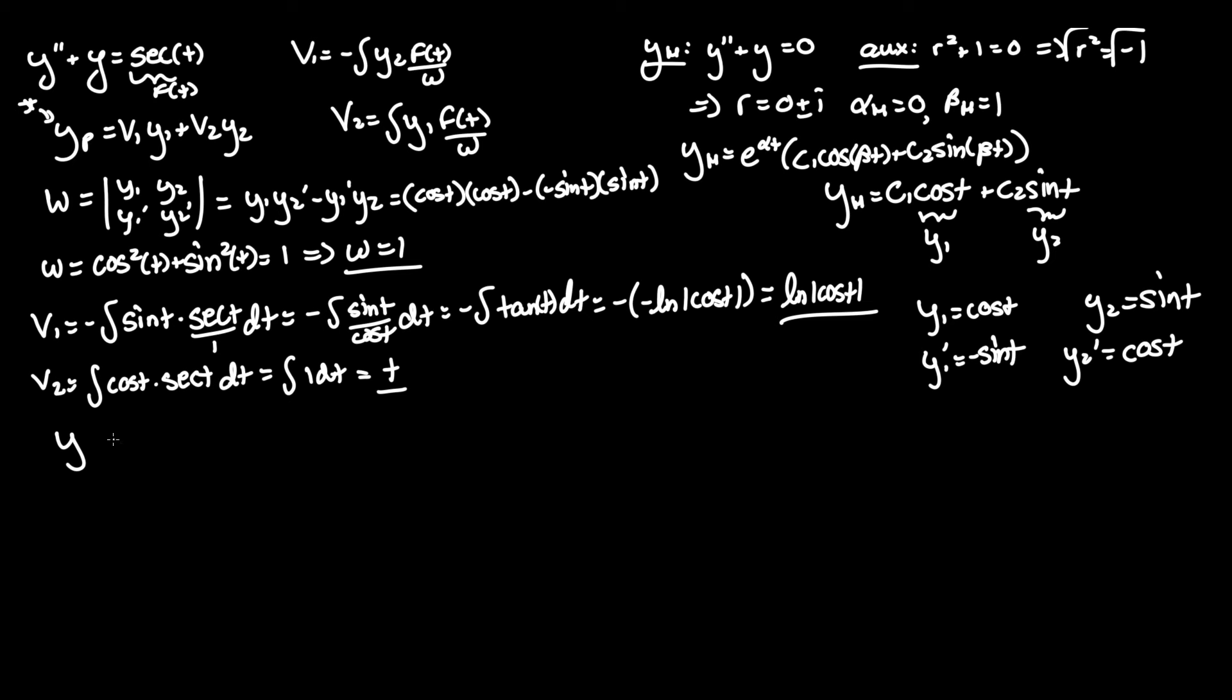That equals v1 y1, so ln cos t times y1 cos t, plus v2 t, y2 sin t. There is no simplification here, that's it. So let me rewrite that: cos t ln absolute value of cos t plus t sin t.